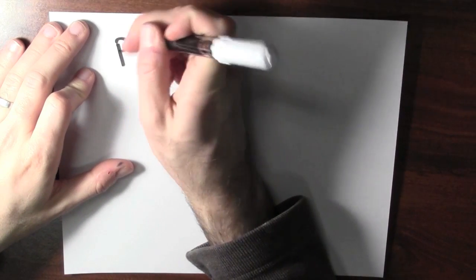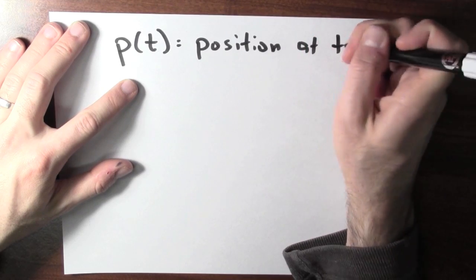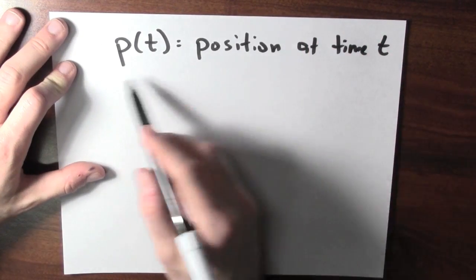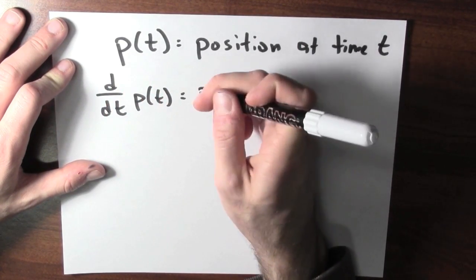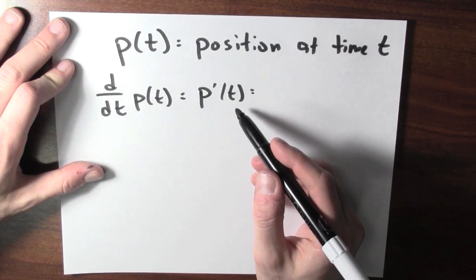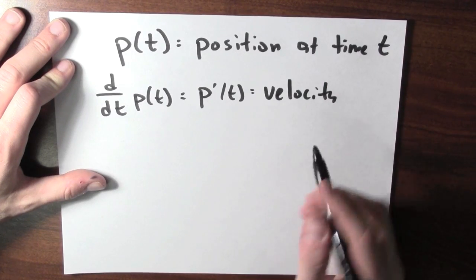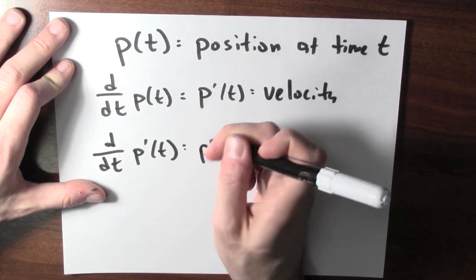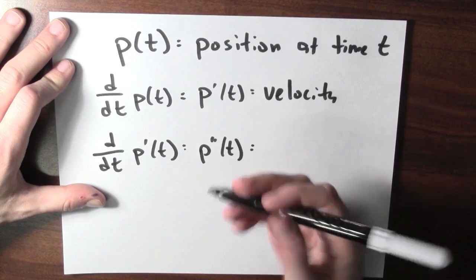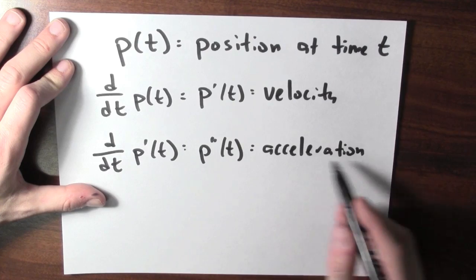There's also a physical interpretation of the second derivative. Let's call p(t) the function that records your position at time t. If I differentiate this, p prime of t is asking how quickly is your position changing — that's velocity. Now I could ask the same question again: what happens if I differentiate velocity? I'm asking how quickly is your velocity changing. We've got a word for that too — that's acceleration. That's the rate of change of your rate of change.